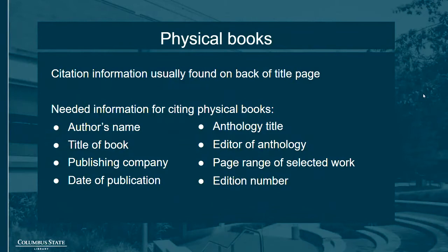Citing books requires you to locate the publication information within the physical media. To cite a book by a single author, you'll need the author's name, the title of the book, the name of the publishing company, and the date of publication. If you're citing an entry in an anthology, you'll also need the title of the anthology, the editor or editors, the page range of the work you're citing, and the edition number if one is specified.